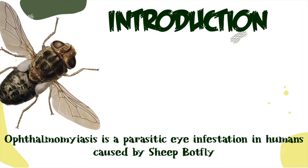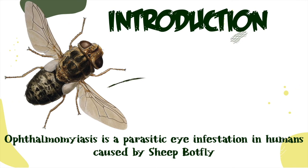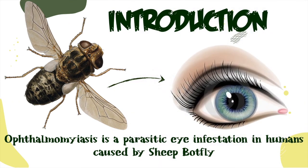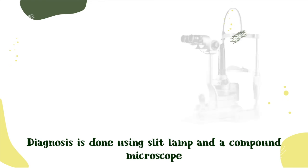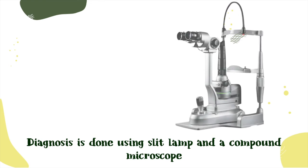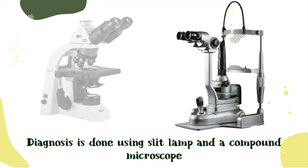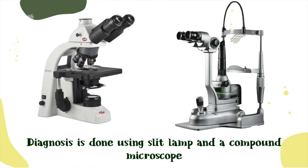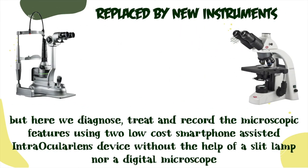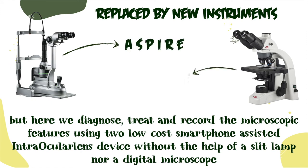Ophthalmomyasis is a parasitic eye infestation in humans caused by sheep bot fly. The diagnosis is usually done using slit lamp and a compound microscope. But here we diagnose, treat and record the microscopic features using two low-cost smartphone-assisted intraocular lens devices which replace the slit lamp and the microscope.